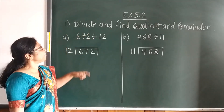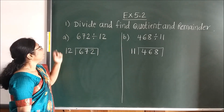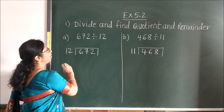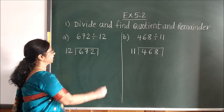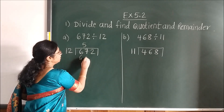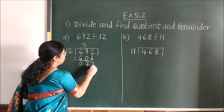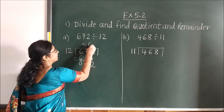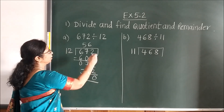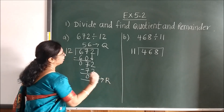Now exercise 5.2: first sum, divide and find the quotient and remainder. Less than 67: 12 fives are 60. Write 5 and here 60. Bring the next number down. Less than 72: 12 sixes are 72. When you subtract, remainder is 0. This is your quotient and this is your remainder.